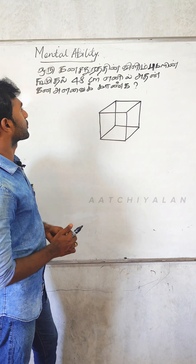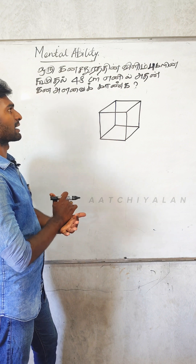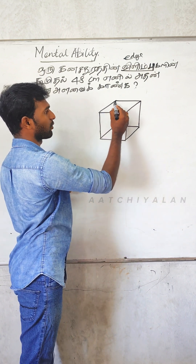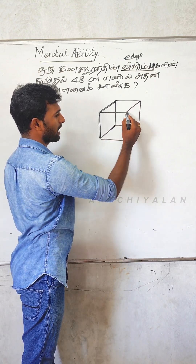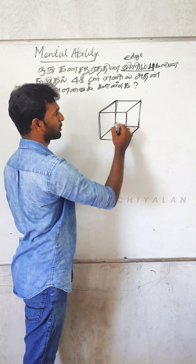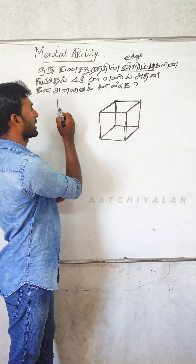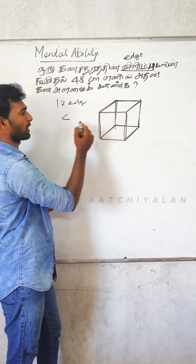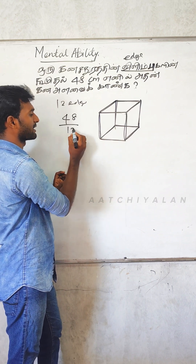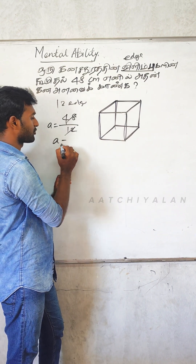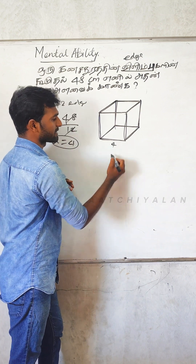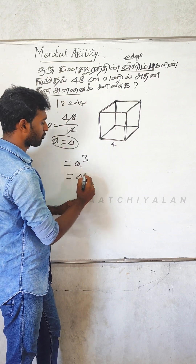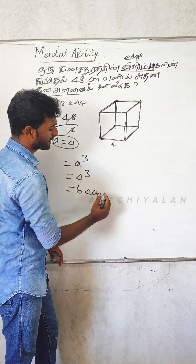It's about 48 centimetres. What is the problem? It's about the edge. The edge: 1, 2, 3, 4, 5, 6, 7, 8, 9, 10, 11, 12 edges. The edge of the cube is 48 cm. Then the side — 48 divided by 12 equals a equals 4. That equals 4 cm. So 4 cube is 64 cm cube.